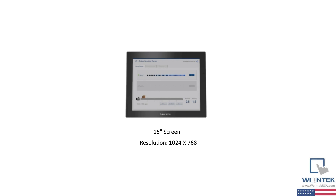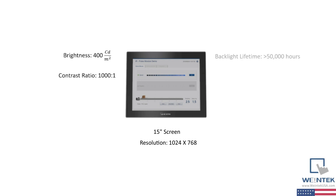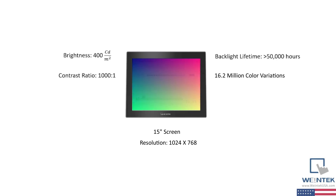The brightness is measured in candela per square meter. Candela is an SI unit that measures the luminous intensity in a given direction. This display has a brightness of 400 candela per square meter and a contrast ratio of 1000 to 1. The backlight lifetime represents the number of hours before the brightness decreases to 50% of the initial spec. In this case it will take 50,000 hours. This display can accurately produce up to 16.2 million different color variations.